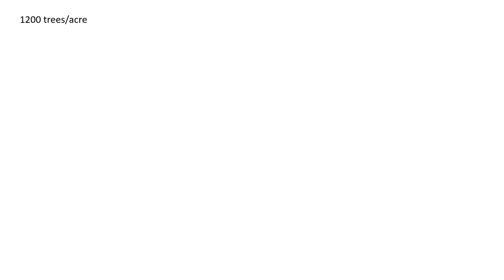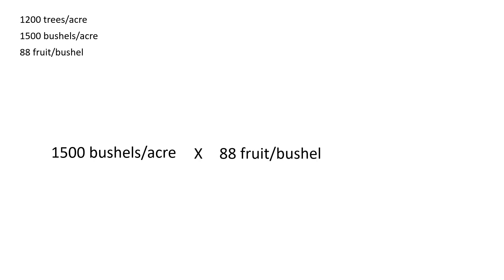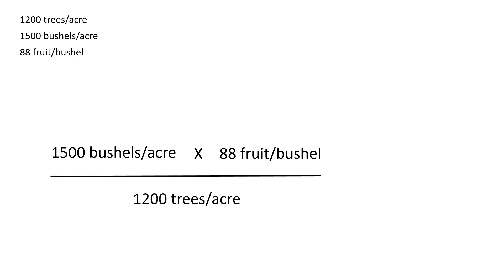Say you have a block planted at a density of 1,200 trees per acre, and want to yield 1,500 bushels per acre of fruit at a size of 88 fruit per bushel. Multiply the 1,500 bushels per acre by the 88 fruit per bushel, then divide this number by the 1,200 trees per acre to get the number of fruit you want on the tree — in this case, 110.